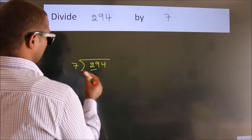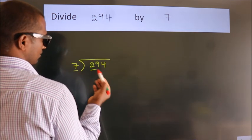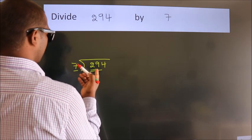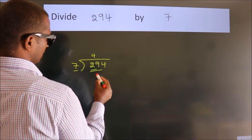here we have 2, here 7. 2 is smaller than 7, so we should take 2 numbers: 29. A number close to 29 in the 7 table is 7 fours, 28.